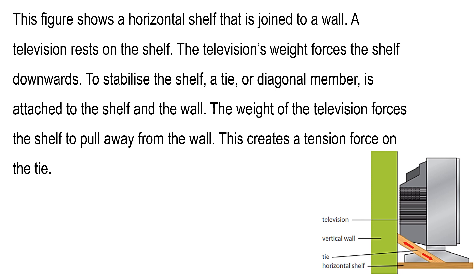This figure shows a horizontal shelf that is joined to a wall. A television rests on the shelf. The television's weight forces the shelf downwards. To stabilize the shelf, a tie or diagonal member is attached to the shelf and the wall. The weight of the television forces the shelf to pull away from the wall. This creates a tension force on the tie.